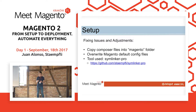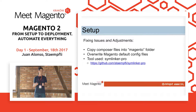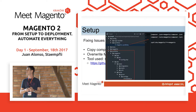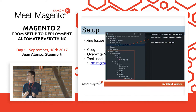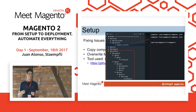The solution is easy. You just need to symlink your Composer files from the root directory into the Magento directory. You can run a command, or you can be a bit smarter and use a tool called symlinker-pro, where you can define the symlinks that you want to create at the end of the Composer process.